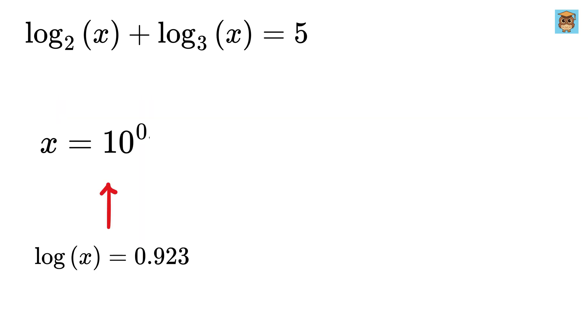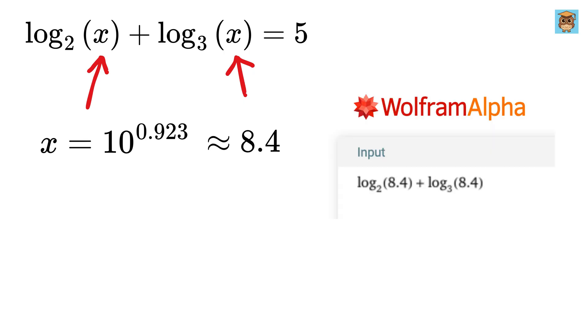So, x equals 10 raised to 0.923, which we can find out using an online calculator which gives us x as approximately 8.4. Let us substitute 8.4 here and verify the same using Wolfram Alpha. See, we get our answer as nearly 5 and we are done.